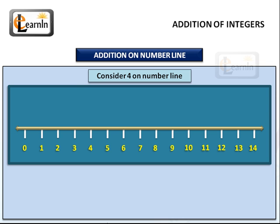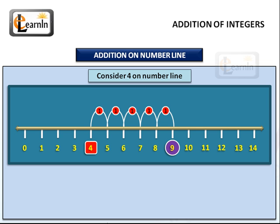Consider any two integers, say 4 and 5, and say we want to add these two integers. First, we have to find 4 on the number line. To add 5 to this integer 4, we need to move 5 spaces to the right on the number line. So by counting each notch in the number line, we move 5 places from 4, and we get to 9. So 4 plus 5 is equal to 9, by the number line method.